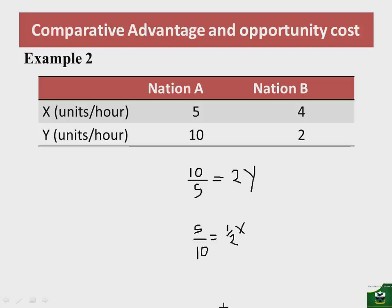This means for nation A to produce an additional unit of Y, it has to give up half a unit of X. For nation B to produce an additional unit of X, it has to give up some units of Y. We take the foregone Y value of 2 divided by the X gain of 4, giving us 1/2 Y — the opportunity cost of X in nation B.